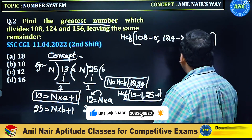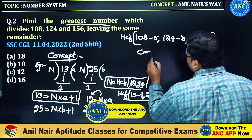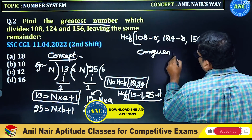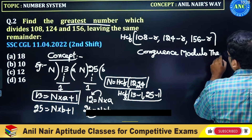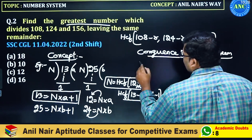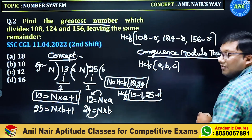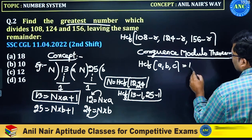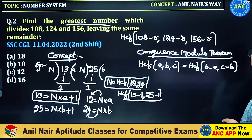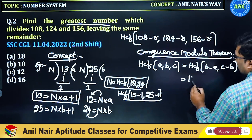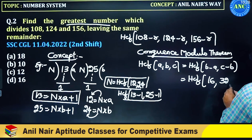The answer is the HCF of A, B, C. According to the congruence modulo theorem, whenever you are doing the HCF of numbers, HCF of A, B, C is equal to HCF of (B minus A) and (C minus B). So B minus A is 124 minus 108 equals 16, and 156 minus 124 equals 32.